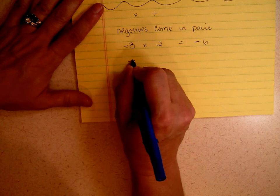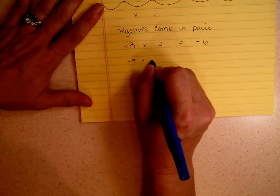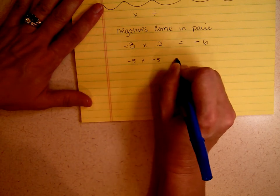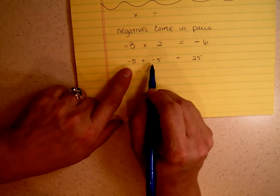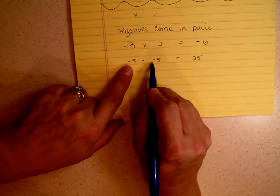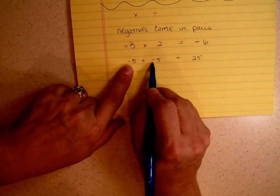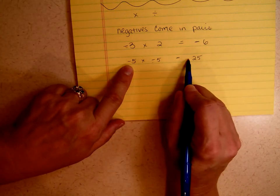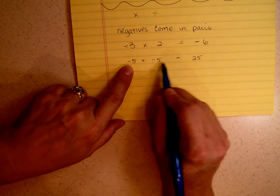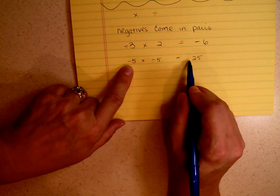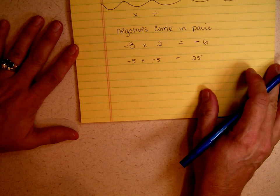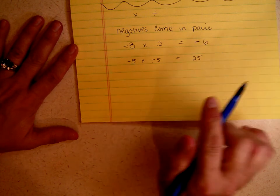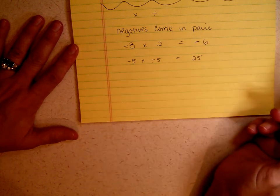What if I have negative 5 times negative 5? I know 5 times 5 is 25. Is my answer positive or negative? I have 2 negatives. If I put a negative sign there, I'll have 3 negatives — and negatives come in pairs. So the answer has to be positive, because you've already got your 2 negatives.